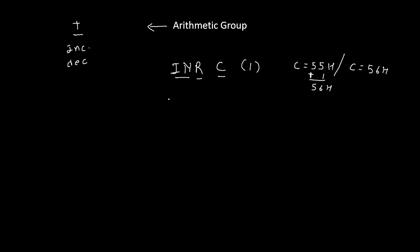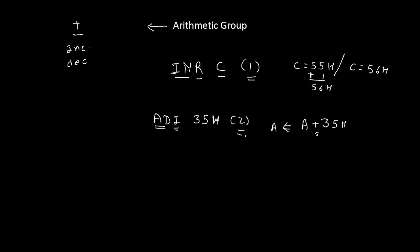Let's take one more example of the arithmetic group: ADI 35H. ADI stands for add immediate — this 35 value will immediately get added inside the accumulator, and its answer gets stored inside the accumulator. We are performing an addition operation, so ADI 35H belongs to the arithmetic group. It is a two-byte instruction: ADI is the first byte and 35H is the second byte.